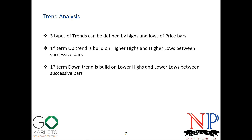The first term downtrend is the opposite — built on lower highs and lower lows between successive bars. Taking the last two bars: if the last bar's low is lower than the previous bar's low and the last bar's high is lower than the previous bar's high, that is a first term downtrend. Time is independent — trend analysis is independent of the time frame. The second term trend is defined by peaks and drops, which I will explain.